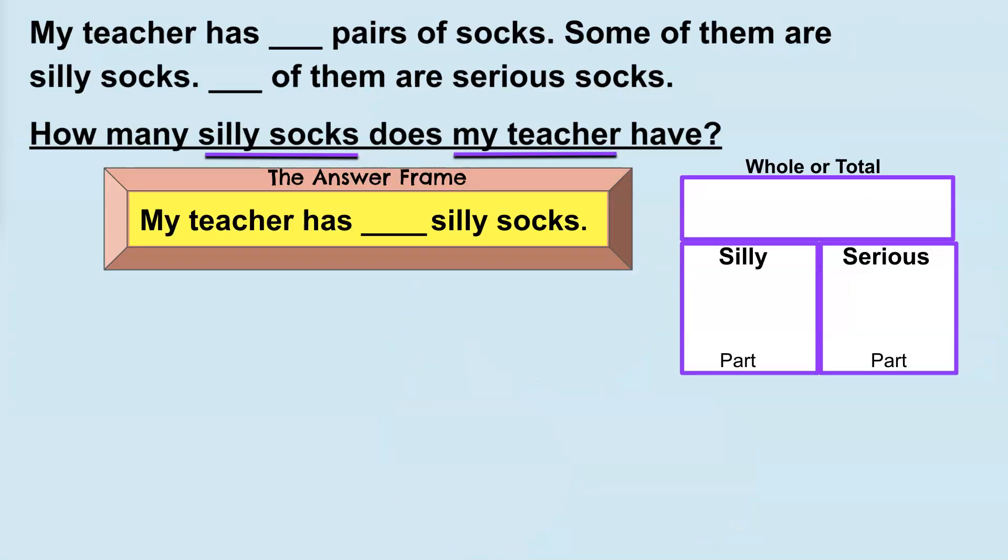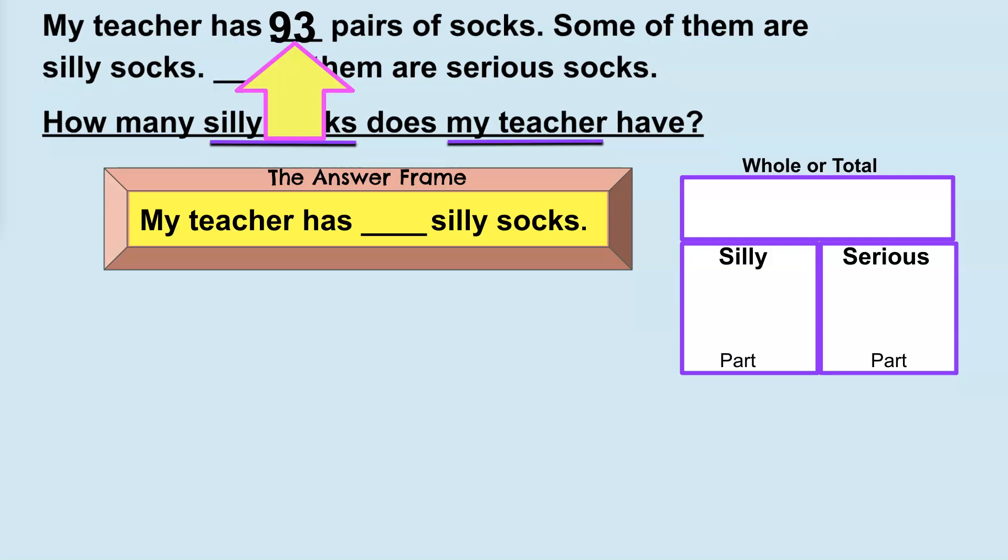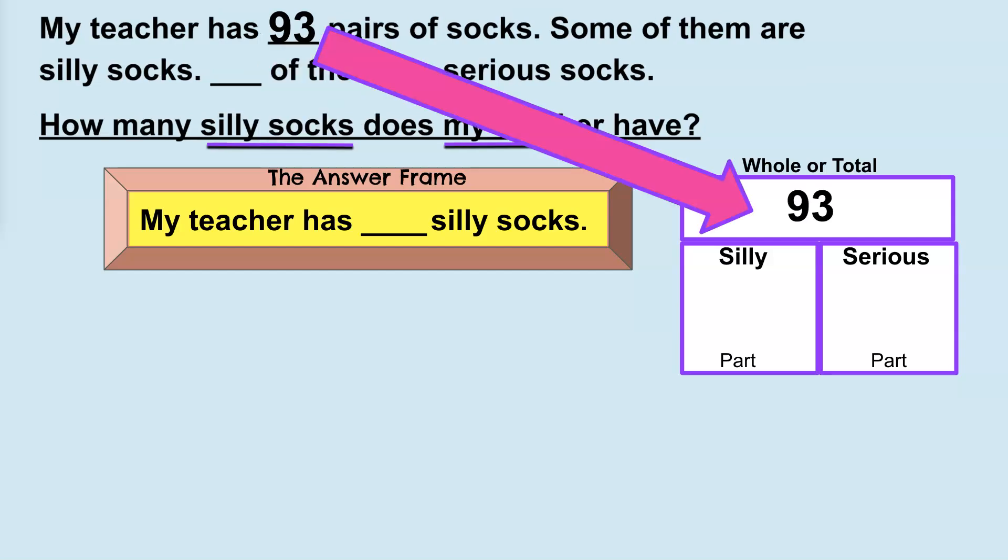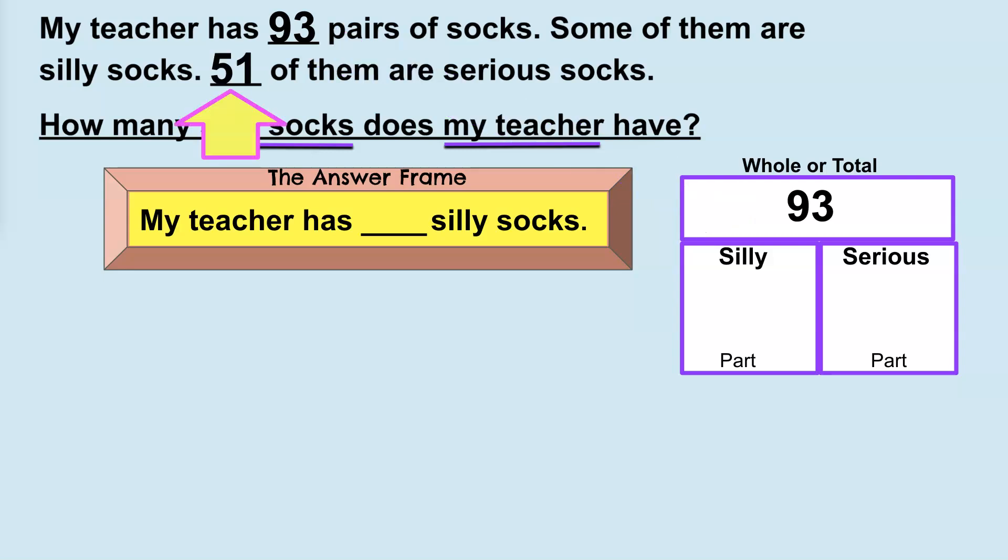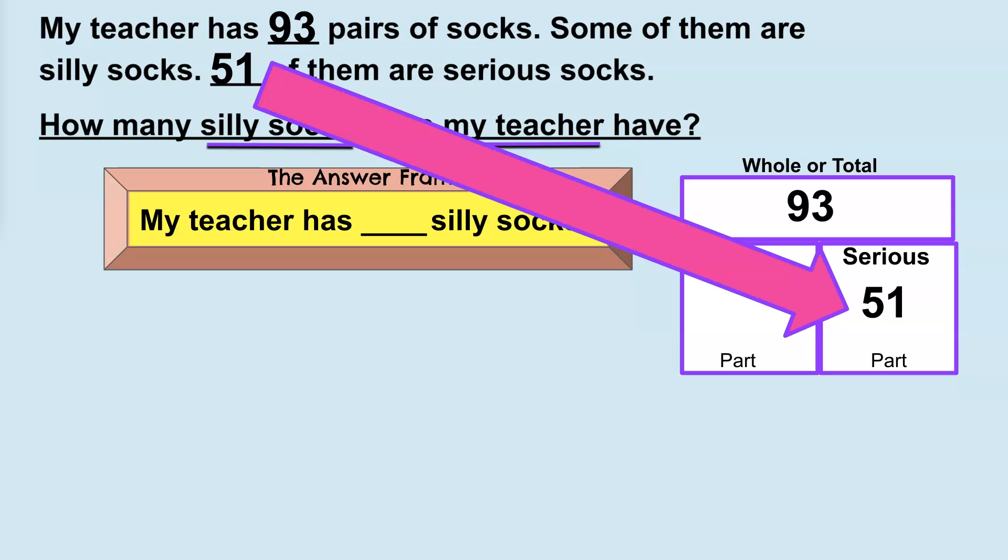So, I've labeled my bar model. There's a whole or total. Some of the socks are silly. Some of them are serious. Now, let's check out the numbers. My teacher has 93 pairs of socks. So, this is my whole or total amount of socks. So, I record it into the whole or total portion of my bar model. 51 of them are serious socks. So, I record that into the part that is serious. 51 are serious.